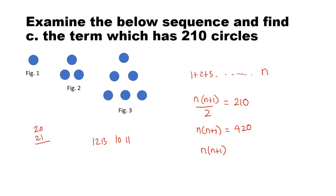20 times 21. We are very lucky. I think the first guess came out right. So the answer here is 420 and n is 20 and n plus 1 is 21. So the nth term is 20. So the answer for this is 20th term has 210 circles.